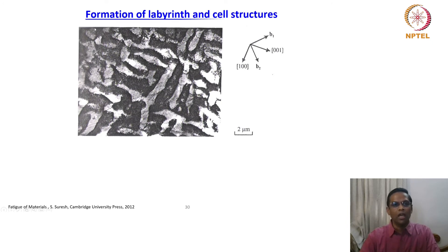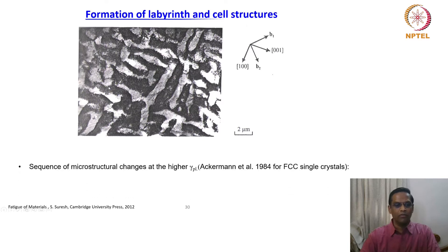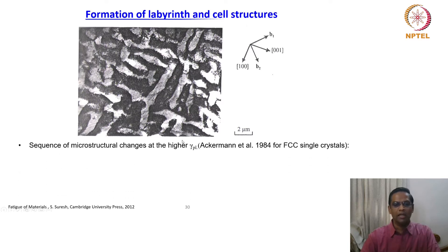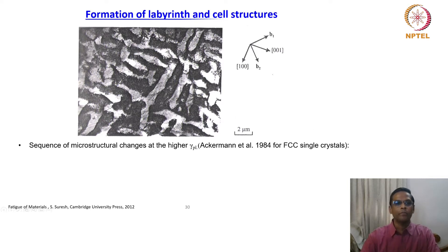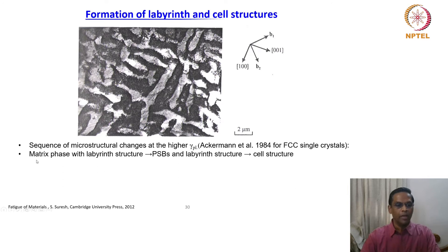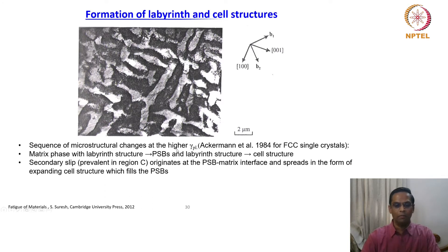This is where we stopped yesterday. The typical sequence of microstructure changes at higher plastic strain: we are now moving from region B into region C. This is typically for FCC single crystals — formation of labyrinth and cell structure. The labyrinth structure appears due to the arrangement of dislocations in a labyrinth-like pattern, and you also see cell structure forming. This is the signature of microstructural evolution at higher plastic strain during fatigue: matrix phase with labyrinth structure, PSBs, and finally cell structure.